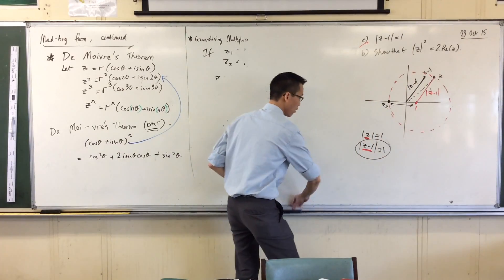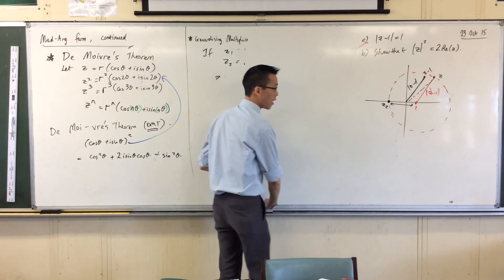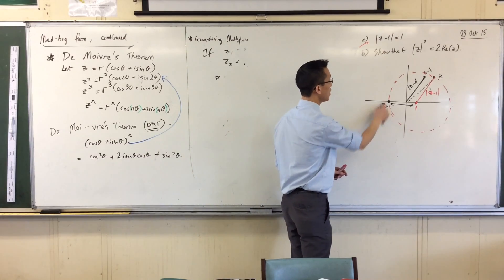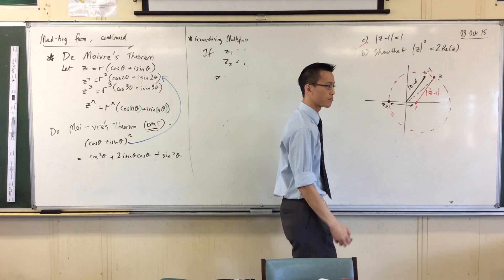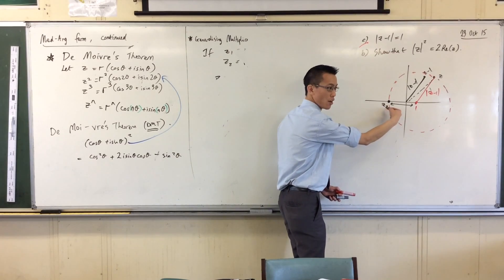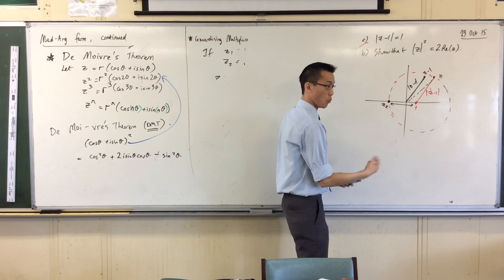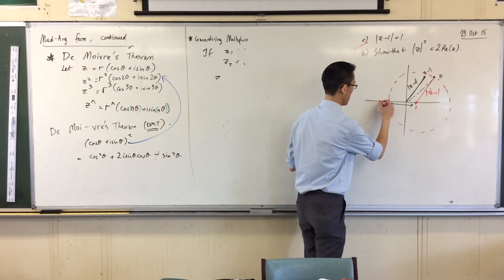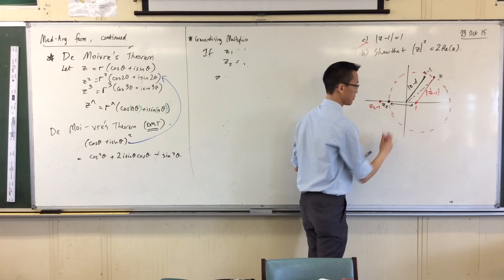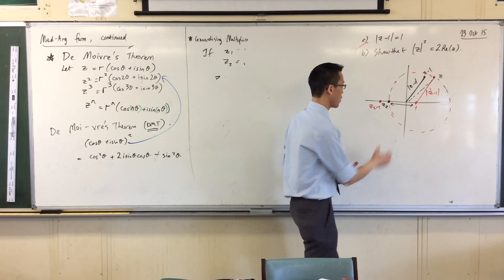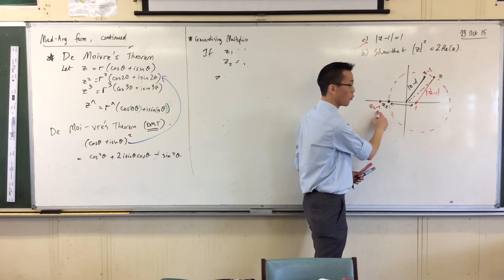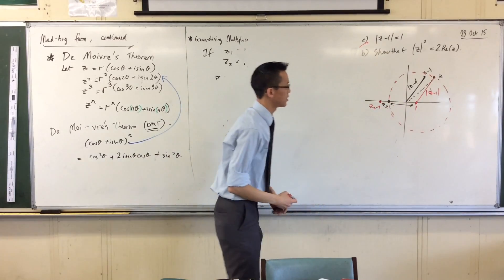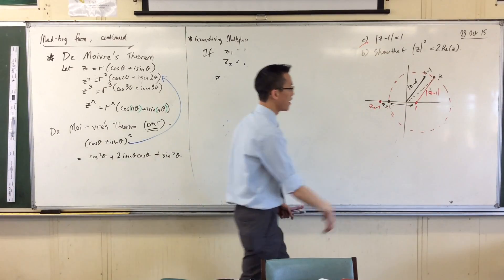So therefore if that distance is one, then by definition where is z2 minus one? It's here, move to the left one unit, so it's still going to be z2 minus one. What's its difference with the origin? It's going to be there.